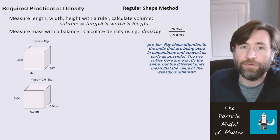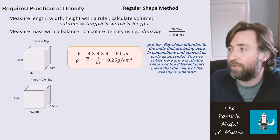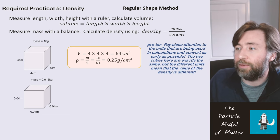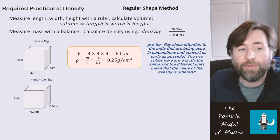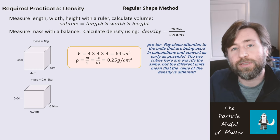So let's work these two calculations through. For the first one, 4cm times 4cm times 4cm gives us 64cm cubed. And then density is mass divided by volume, 16g divided by 64cm cubed gives you 0.25g per cm cubed.